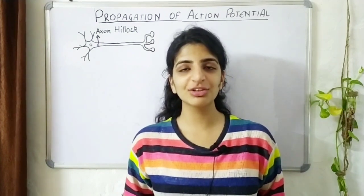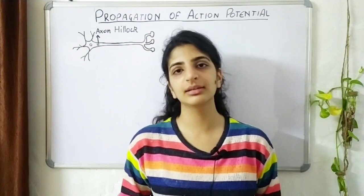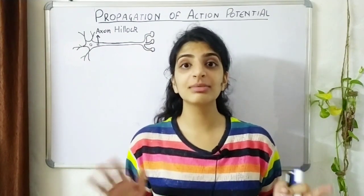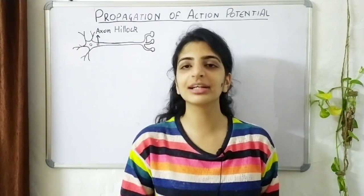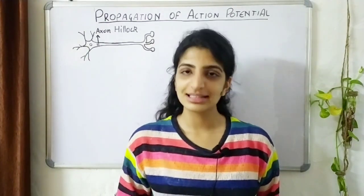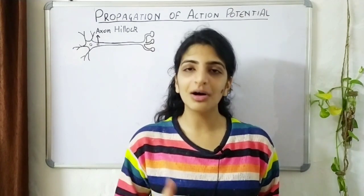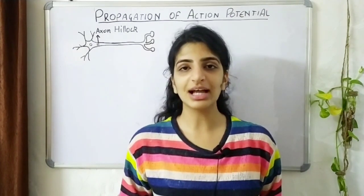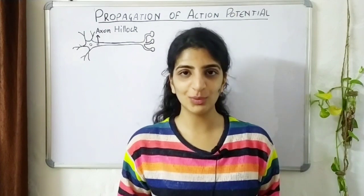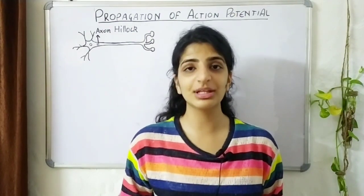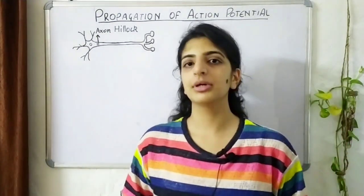Whenever we talk about the generation of an action potential, we consider a part of a neuron and about one sodium channel. Obviously, along the entire neuron there will be several others, and we'll need a mechanism for the transfer of that impulse generated in one part to another. This we are going to understand when we study the propagation of an action potential along the entire neuron. Before you start this, you must understand the structure of a neuron and how an action potential is generated — if you don't, you'll find the links in the description.